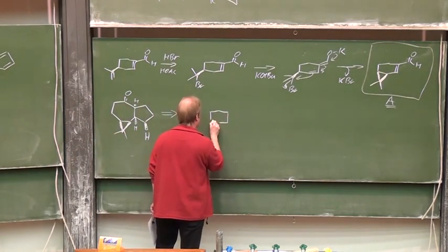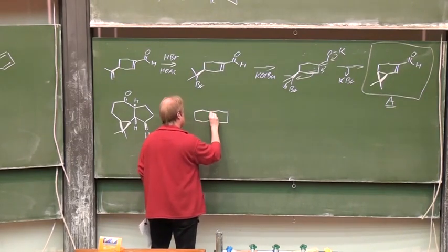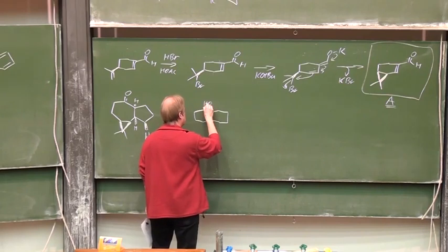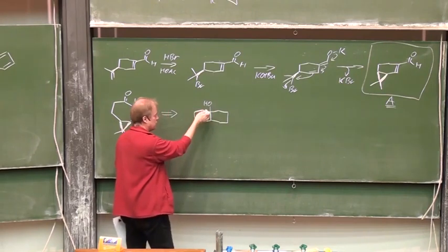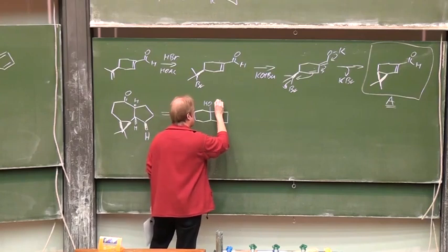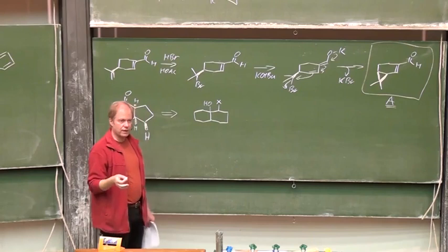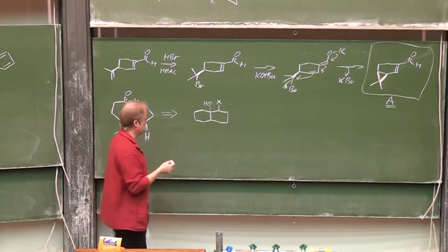And therefore we have to think about a retro pinacol pinacolone rearrangement in our retrosynthetic analysis. So, six membered ring, six membered ring. Here, the OH group. We don't care about the stereochemistry at this and that center. Here, the leaving group X, whatever that is. We could think about that later on. Then, sorry, here is the CH3 group.